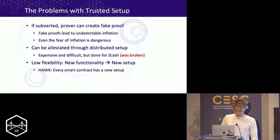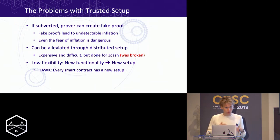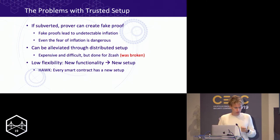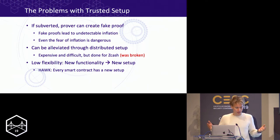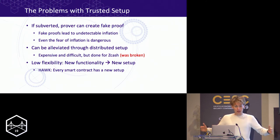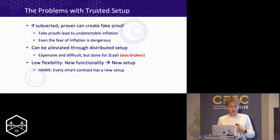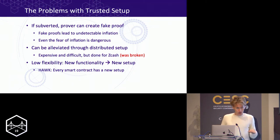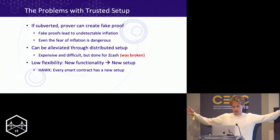What is the problem with a trusted setup? Many of the most efficient SNARK constructions have one, and if the setup can be subverted — if the person doing the setup is cheating and colluding with the prover — then the prover can create fake proofs. He can say 2 plus 2 equals 5. In a cryptocurrency like Zcash or Monero, this fake proof can lead to undetectable inflation: I can spend more money than I have, and the zero-knowledge property means no one will see new money was created out of thin air.